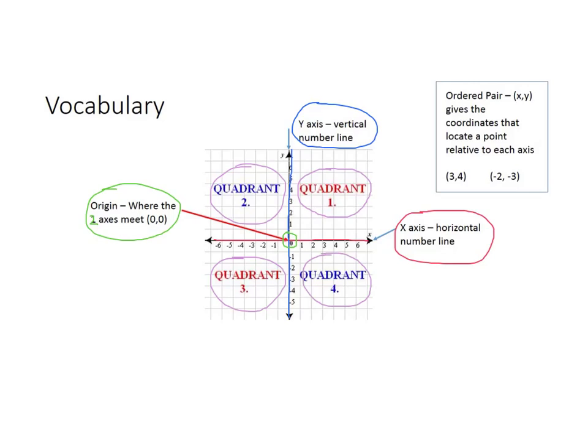But the most specific way that you can give directions to somebody is by telling them what the ordered pairs are, and that's this vocabulary right up here. Ordered pair is always given with the x-coordinate first and then the y, and that gives the coordinates that locate a point, and that's relative to each axis. For example, (3, 4) means we go over 3, up 4. The 3 tells you the x-axis. The 4 tells you the y-axis. Coordinates or ordered pairs can also be negative. For example, we go on the x-axis over to negative 2, and the y-axis is negative 3.